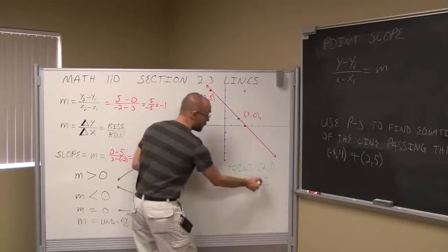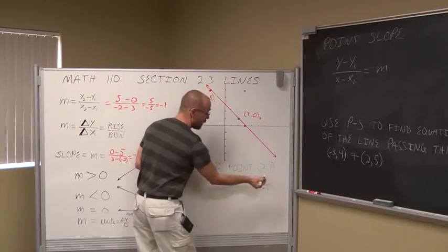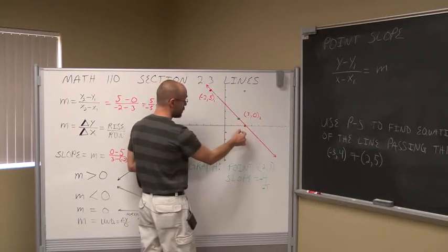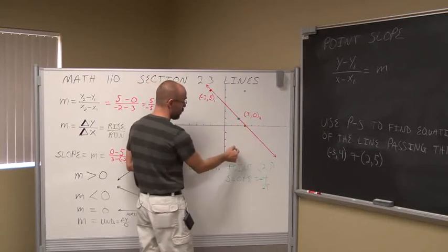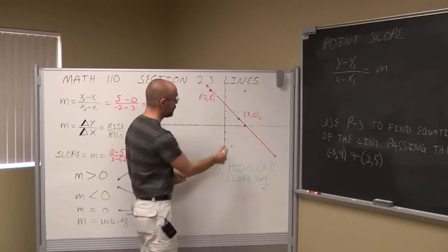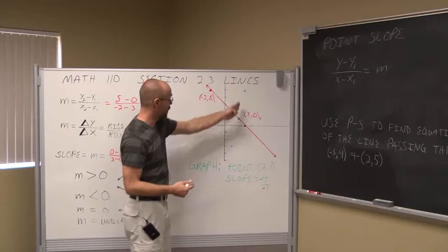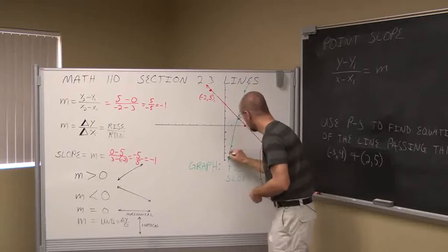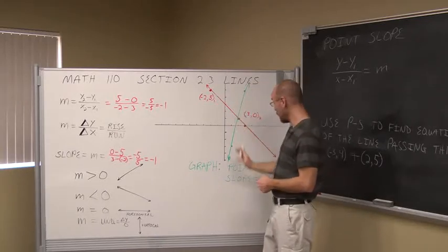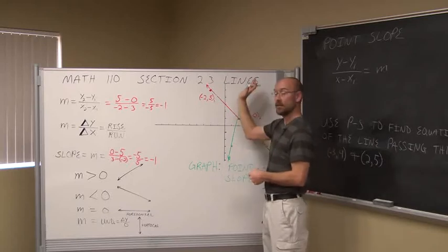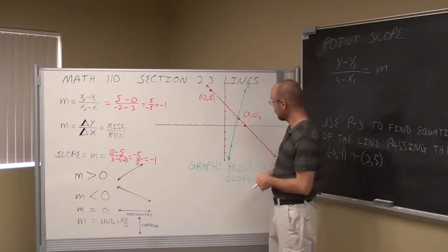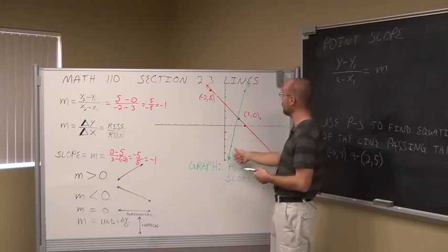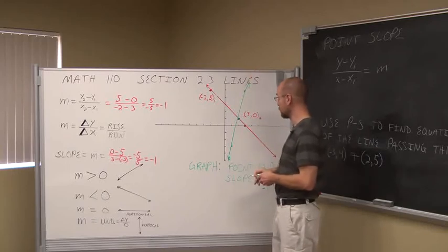No matter how many times I apply this pattern, every point I move to will be in a nice straight line — so I can graph it. Notice it's a very steep line. A slope of 4 means it's increasing very fast. And because it's positive 4, as we move from left to right, it's going in a positive y direction.